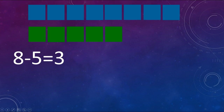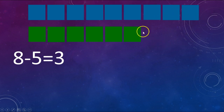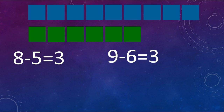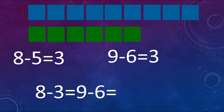Now what happens if I add one more blue and one more green square to each line? Does the difference change? I'm going to add a blue and a green one. The difference is still the same — I still have a difference of 3 squares. I still have 3 more blue ones than green ones. So the new number sentence is 9 minus 6 equals 3, because I added 1 to each. So 8 minus 5 equals 9 minus 6, and both equal 3.